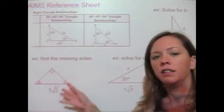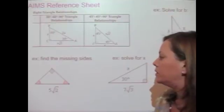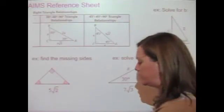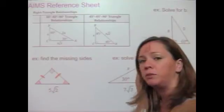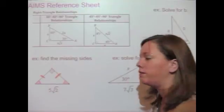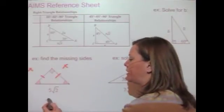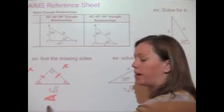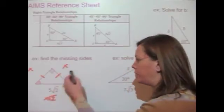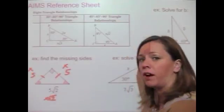Let's use that to find missing sides. In this triangle, the two angles on the bottom are congruent, so it must be a 45-45-90 triangle. The legs are each x and the hypotenuse is x√2. Since the hypotenuse is 5√2, and that equals x√2, each of the legs must be 5.